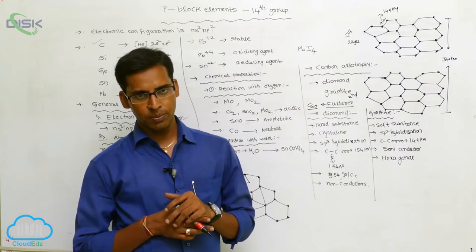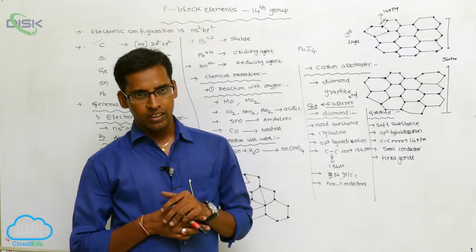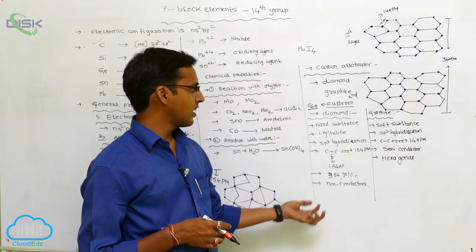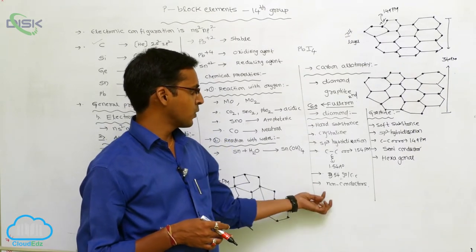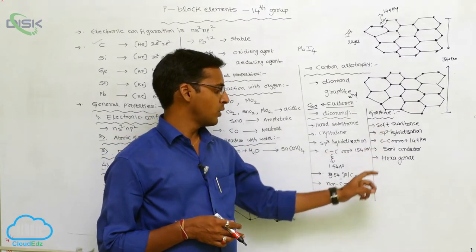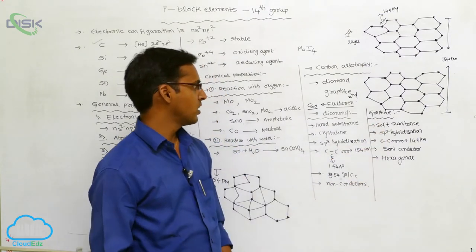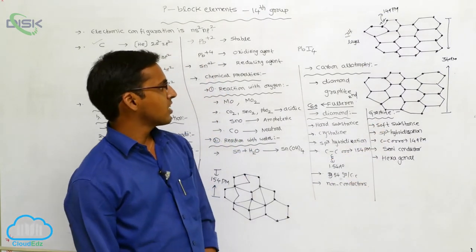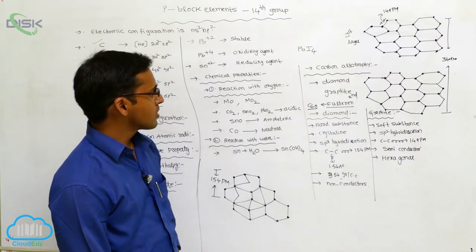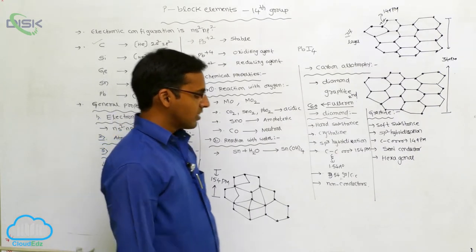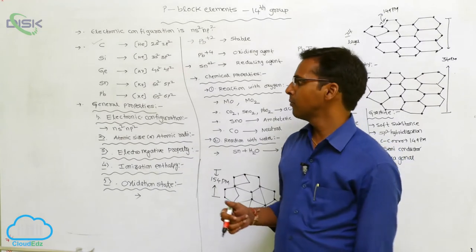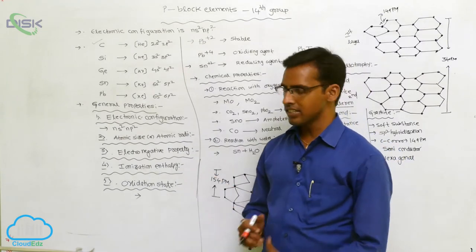Two types of rings are present in fullerene, whereas graphite shows only hexagonal rings. The diamond shape is tetrahedral and undergoes sp3 hybridization, while graphite undergoes sp2 hybridization. These are the allotropic forms of carbon, and the allotropic nature decreases from top to bottom.